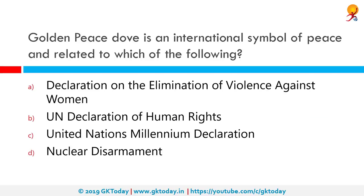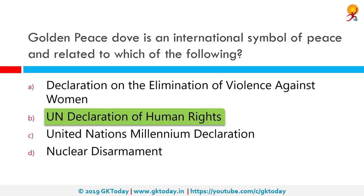The Golden Peace Dove is an international symbol of peace related to which of the following? It is related to the UN Declaration of Human Rights. The Universal Declaration of Human Rights is a historic document adopted by the United Nations General Assembly at its 183rd session on 10th December 1948 as Resolution 217A at the Palais de Chaillot in Paris, France.